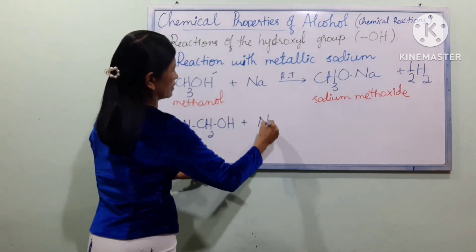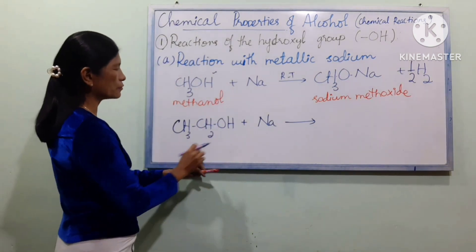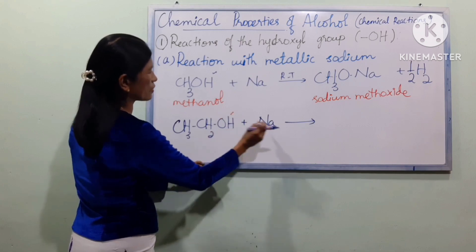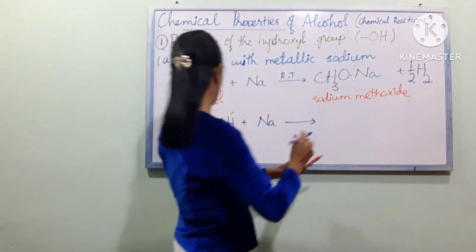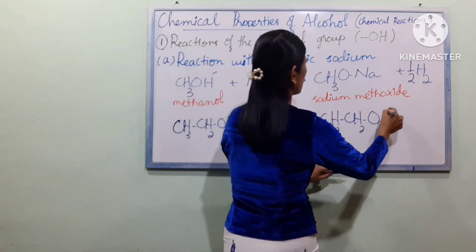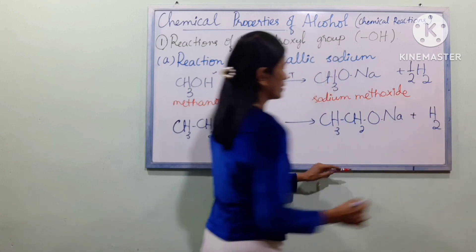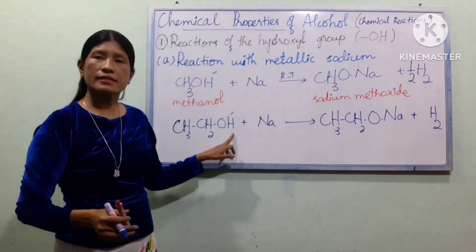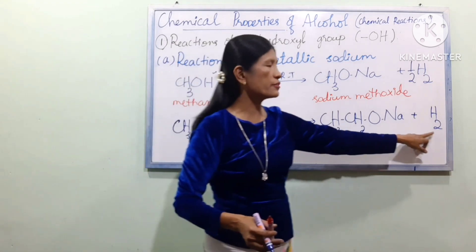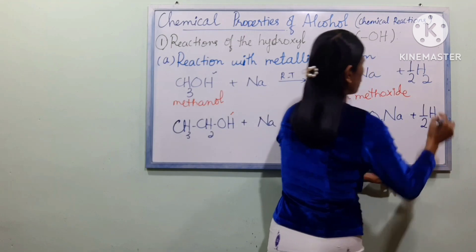Similarly, CH3CH2OH (ethanol) plus Na reacts through the OH hydroxyl group, producing CH3CH2ONa plus H2. The hydrogen gas H2 is released in this reaction.